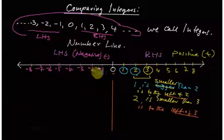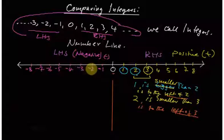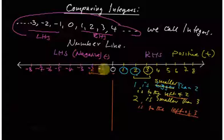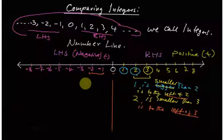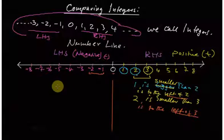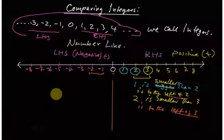Now compare negative two and negative one. Someone has to give away two, and someone has to give away one — the one who gives away one is better off than the one who gives away two. So negative one is greater than negative two. We can see that on a number line, the integer which is to the left of another integer is smaller than the integer to the right of it.